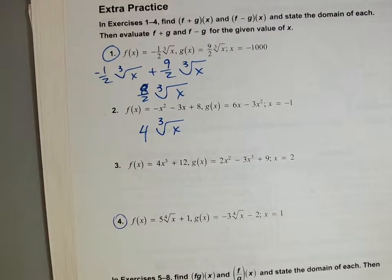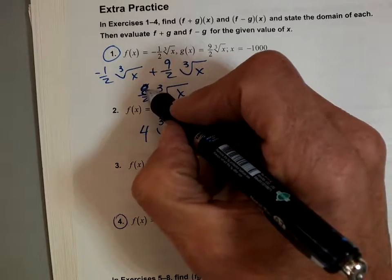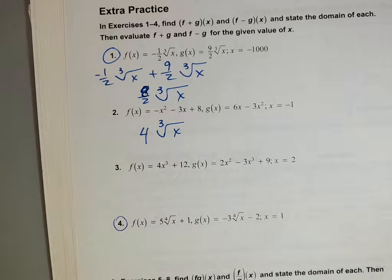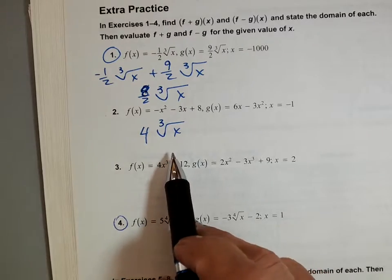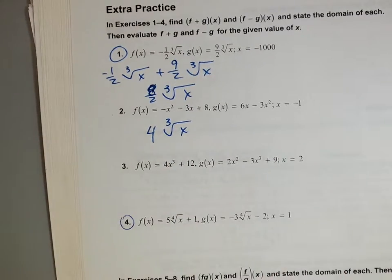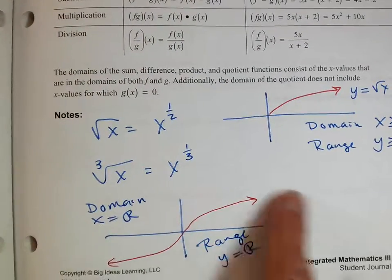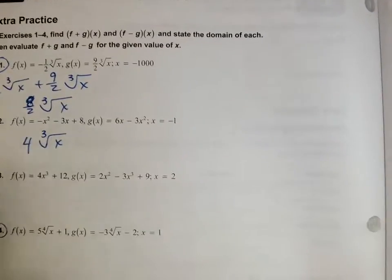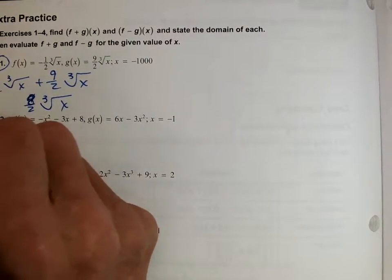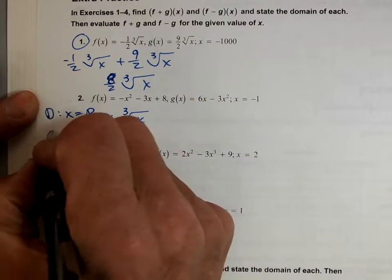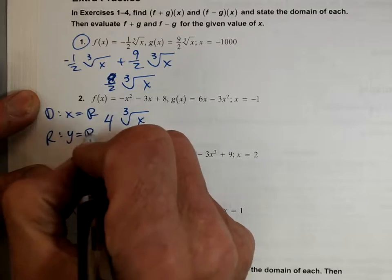Eight-halves because negative one plus nine makes eight — eight over two equals four. Now what is the domain? It's a cube root, so the domain is X equals all real numbers, and the range is Y equals all real numbers.